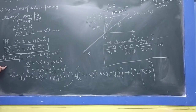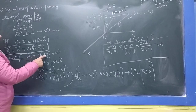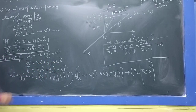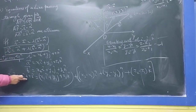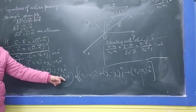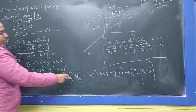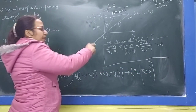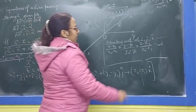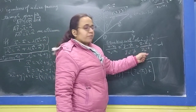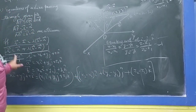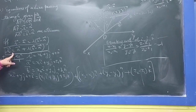To convert to Cartesian form: R equals X i-cap plus Y j-cap plus Z k-cap, A equals X1 i-cap plus Y1 j-cap plus Z1 k-cap, B equals X2 i-cap plus Y2 j-cap plus Z2 k-cap. Then B minus A gives (X2−X1) i-cap plus (Y2−Y1) j-cap plus (Z2−Z1) k-cap. Comparing coefficients gives the Cartesian equation: (X − X1)/(X2 − X1) = (Y − Y1)/(Y2 − Y1) = (Z − Z1)/(Z2 − Z1) = lambda.